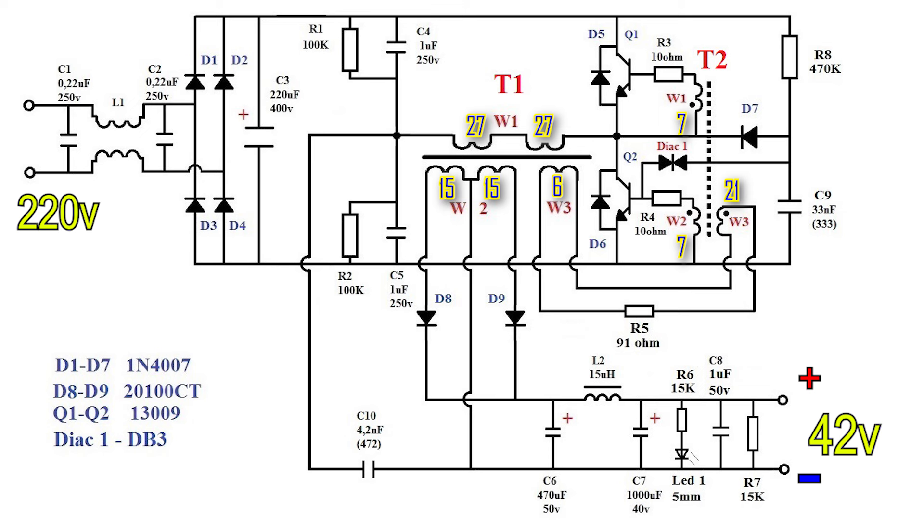Transformer T2 has a primary winding of 21 turns. Both secondary windings W1 and W2 consist of seven turns. Please note that transformer T2 has windings W1 and W2 connected in antiphase.